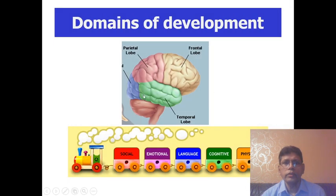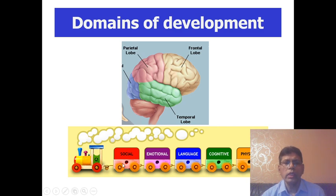The brain has domains of development: physical, cognitive, language, emotion, social, speech, hearing, vision, and others.